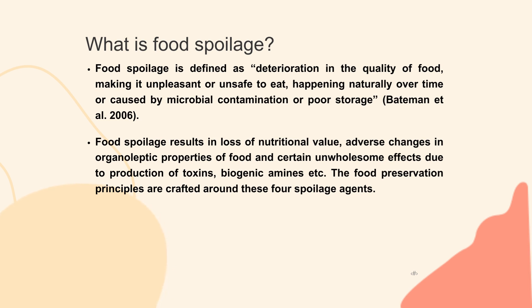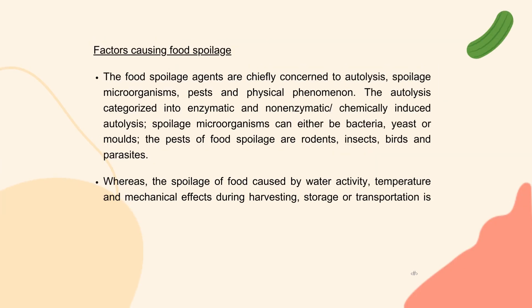The food preservation principles are crafted around four spoilage agents. The food spoilage agents are chiefly autolysis, spoilage microorganisms, pests and physical phenomena. Autolysis is categorized into enzymatic and non-enzymatic, chemically-induced autolysis. Spoilage microorganisms can be bacteria, yeast or molds. Pests include rodents, insects, birds and parasites. The spoilage of food caused by water activity, temperature and mechanical effects during harvesting, storage or transportation is attributed to physical phenomena. This topic will be explained in more detail under Module 10.